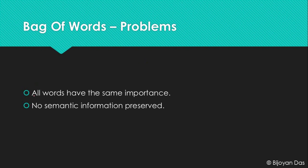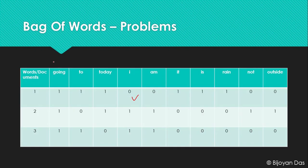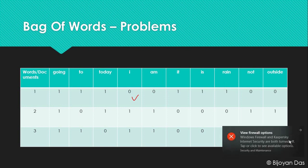The first problem is that all the words have the same importance. As you can see, the word 'going', the word 'to', or the word 'today' — all of them are represented with ones. You can't distinguish which word is which. When you feed this into a machine learning algorithm, the algorithm will think that all these words have the same impact on a document.